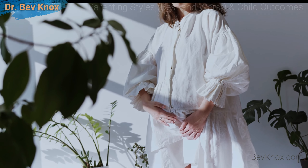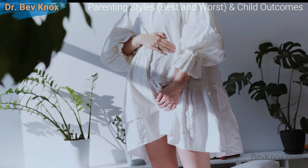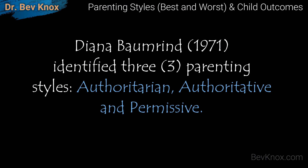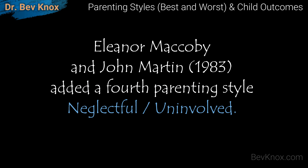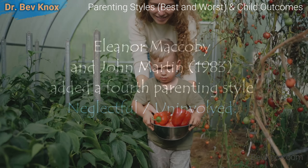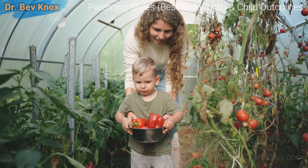In this lecture, we will review the various types of parenting styles and child outcomes. In pioneering research, Diana Brumridge in 1971 identified three parenting styles: authoritarian, authoritative, and permissive. Eleanor McAbee and John Martin in 1983 added a fourth parenting style, neglectful or uninvolved. I will review all four in detail, but first, some important terms to know.